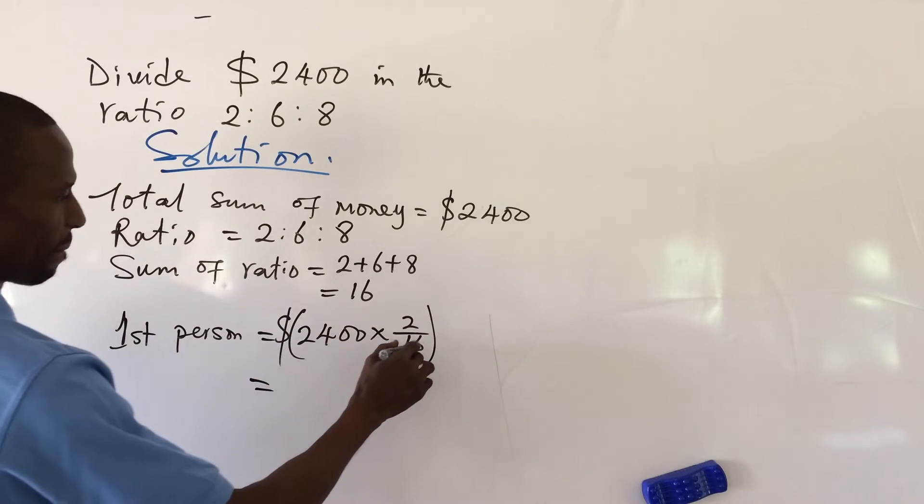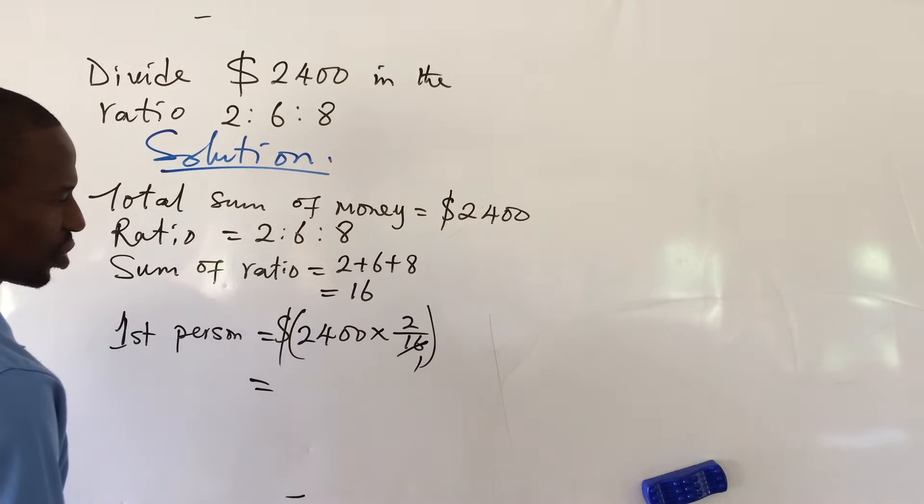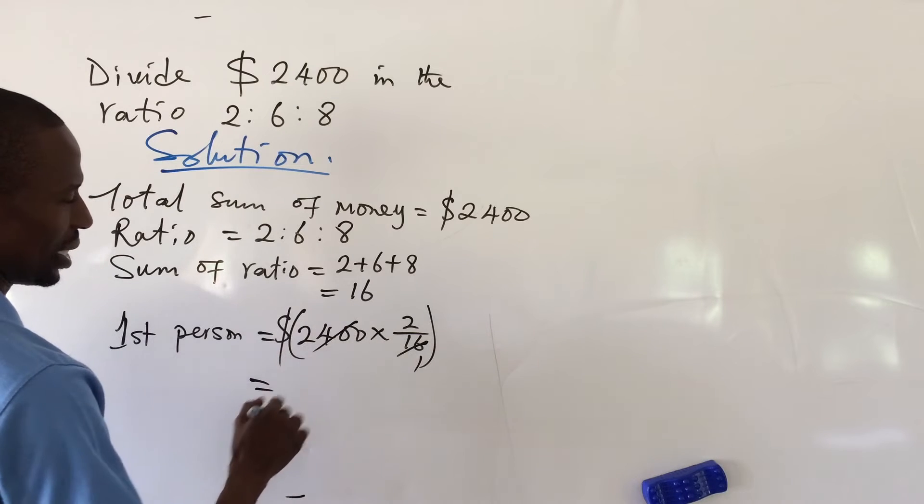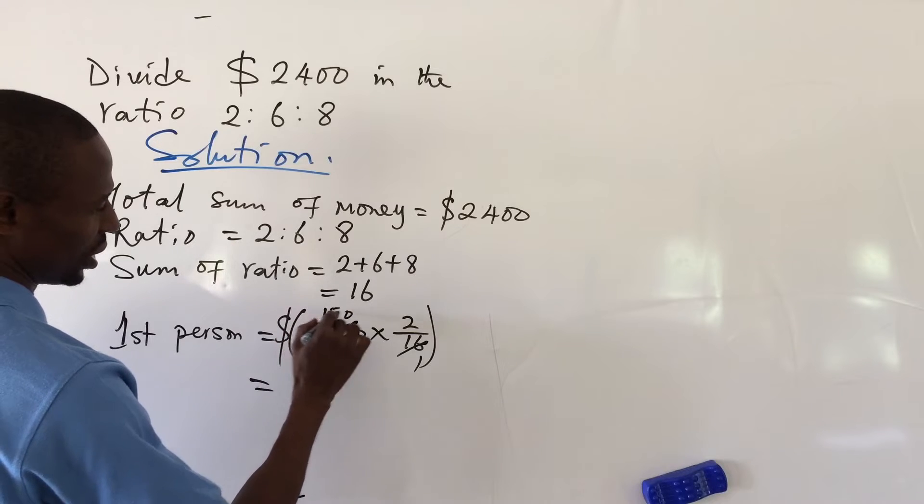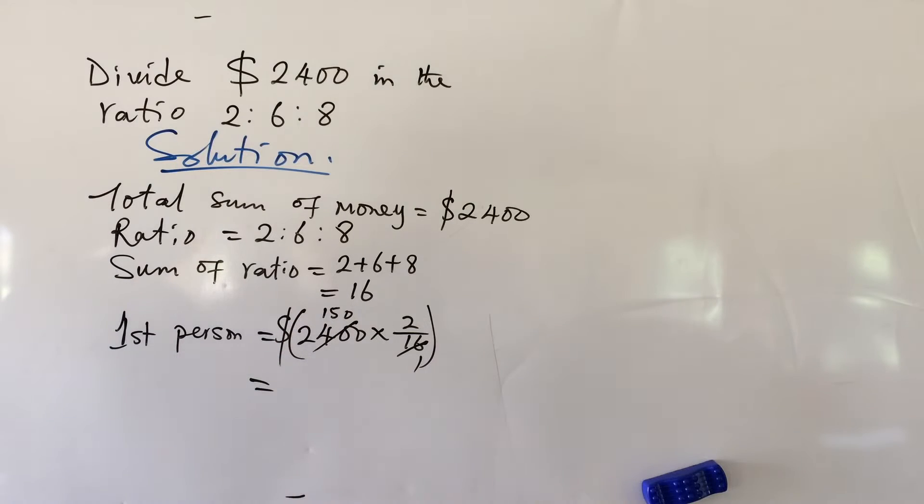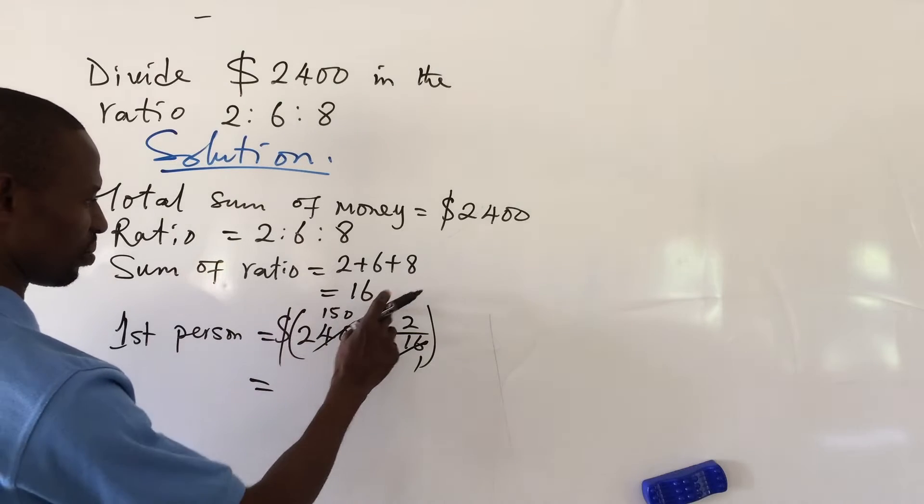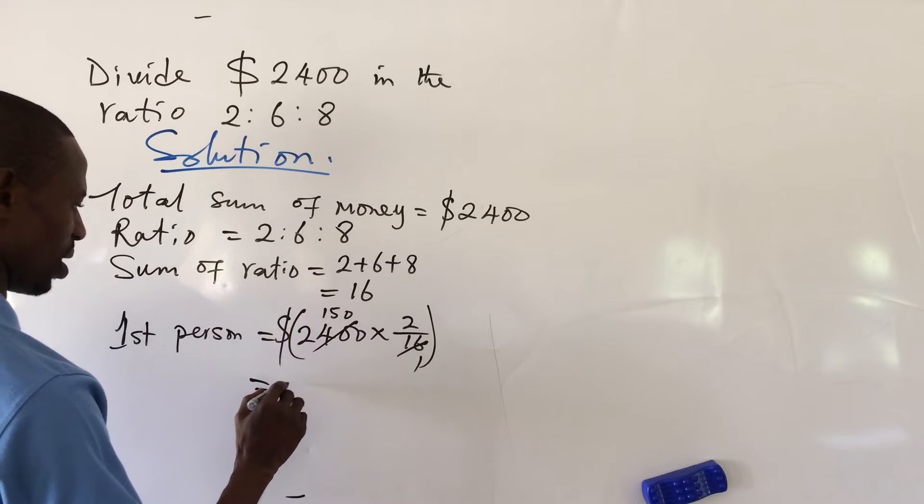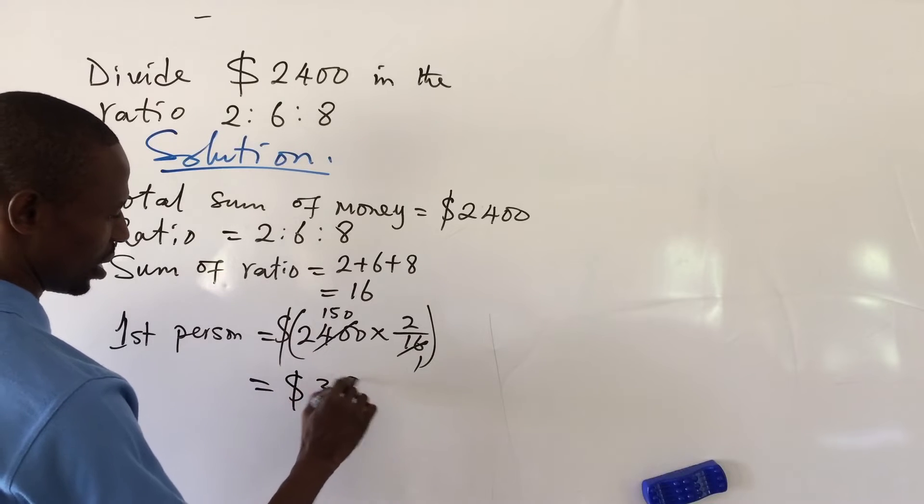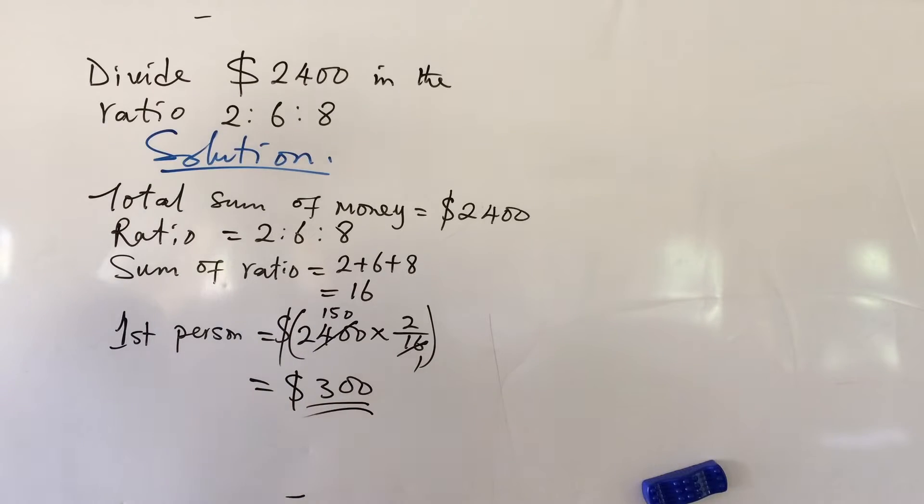Let's split out and see. 16 here gives us 1, and 16 into this gives us 150. Then if you use 150 to multiply 2, this will give us $300. So the first person will go with $300.